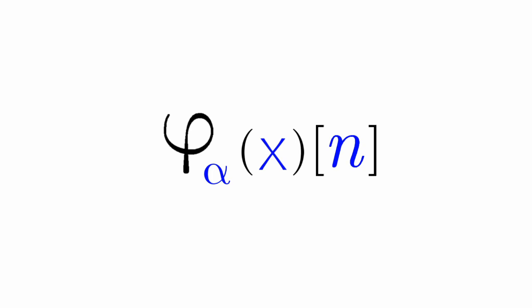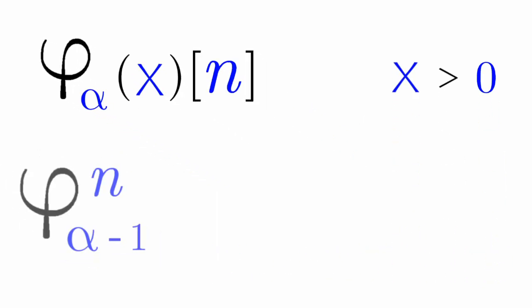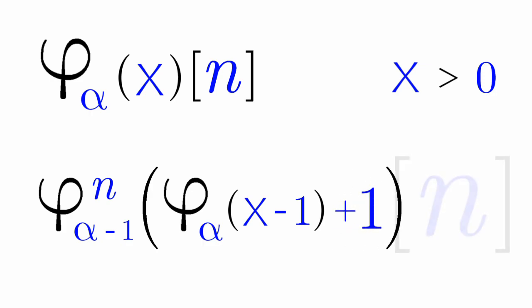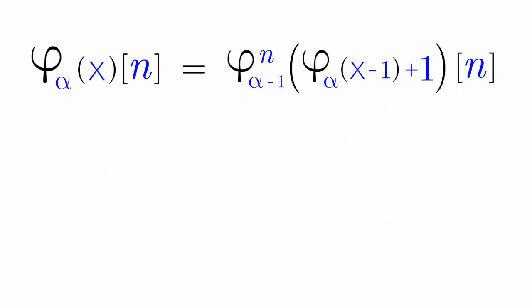But what about Phi Alpha X of N when X is greater than 0? We also do N copies of Phi Alpha minus 1. And inside this open and closed parenthesis is Phi Alpha, and then we have X minus 1, and then we add a plus 1, and let's not forget N. Looks too cryptic. Let's have an example.